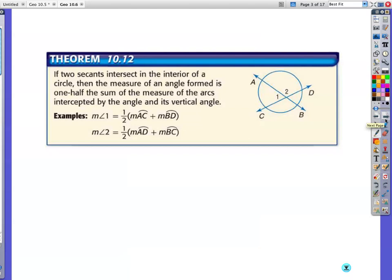What do we need to know about that? If two secants intersect the interior of a circle, then the measure of the angle formed is one half the sum of the measure of the arcs intercepted by the angle and its vertical angle. So basically angle one is one half this arc plus this arc. Let's go the other way. This is angle two right here. It's equal to one half this arc plus this arc.